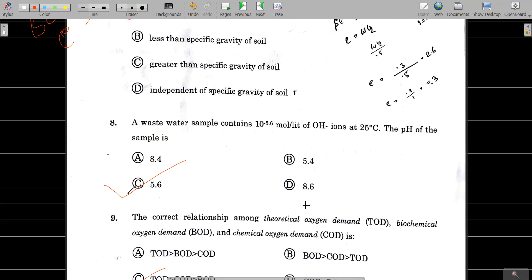Question number 8: A wastewater sample contains 10 to the power minus 5.6 mol per liter of OH minus ion at 25 degrees. The pH of the sample: POH is nothing but minus log of OH concentration, which is 5.6. So pH equals 14 minus 5.6, which is 8.4. The answer is option A.